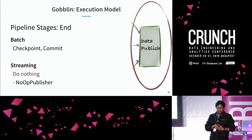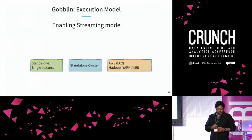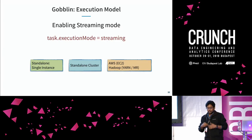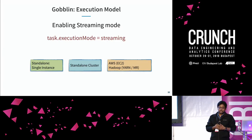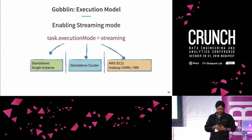The data publisher in batch mode publishes and does checkpointing and commits the data. In streaming, it does nothing because there is no concept of data publishing in streaming mode. You can use the same Goblin specification and the same deployment platforms to run stream-to-stream, stream-to-batch, batch-to-batch, or batch-to-stream workloads. All you need to do to run in streaming mode is specify one property: task.execution.mode as streaming, and it works for all execution platforms.